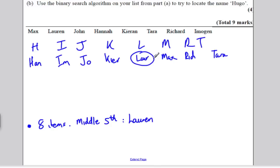Now if you're looking for Hugo, Hugo would be before Lauren, so you cross off Lauren and all the people after Lauren. What you're left with next is Hannah, Imogen, John, and Kieran.